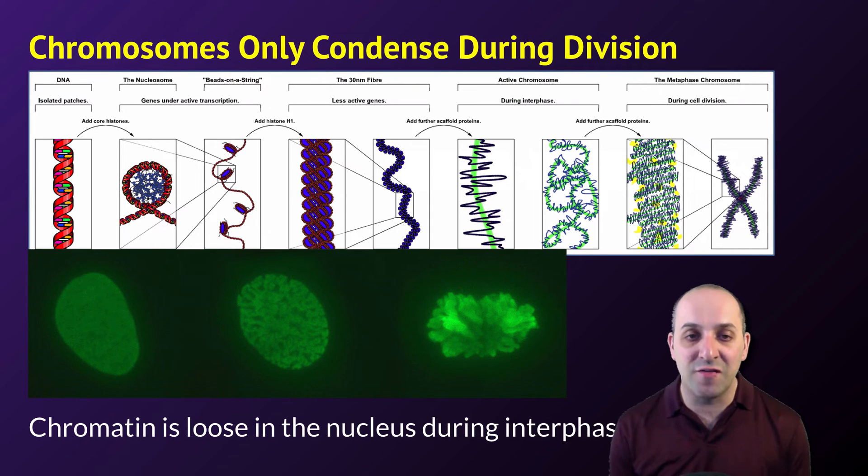During interphase, the chromosomes exist in the nucleus as loose, decondensed material. They do not exist as these tightly packaged chromosomes.